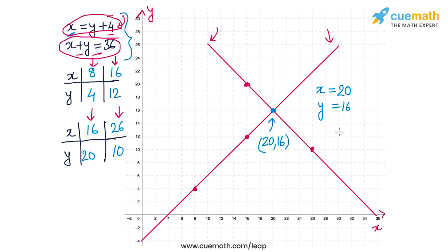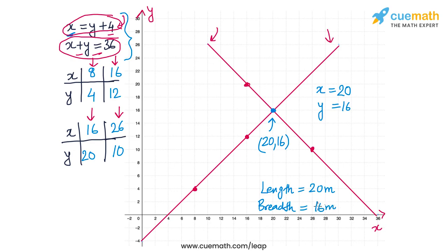The final solution is that the length of the rectangle is 20 meters and the breadth of the rectangle is 16 meters. With that, we have solved Question 5 of this exercise.